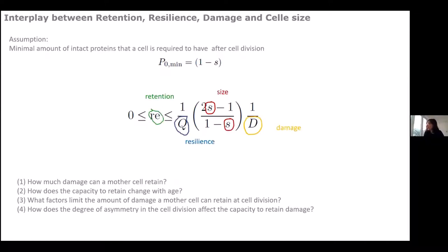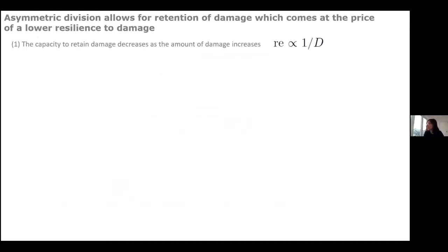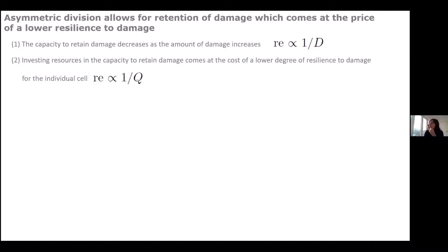A first result is that the capacity to retain damage decreases as the amount of damage in the cell increases — intuitive but confirmed. Interestingly, investing more resources in retention becomes increasingly costly: while early on it's easy to keep damage in the mother because there isn't much, as damage accumulates you must actively push to maintain retention. This comes at the cost of lowering the cell's individual resilience to damage.